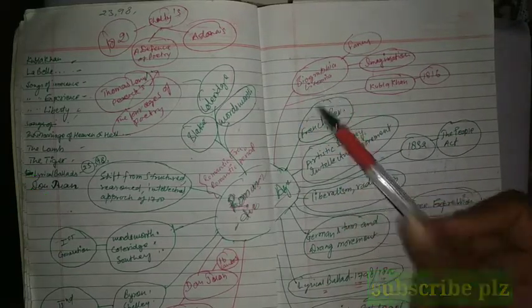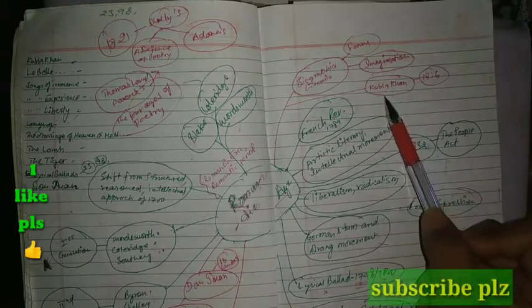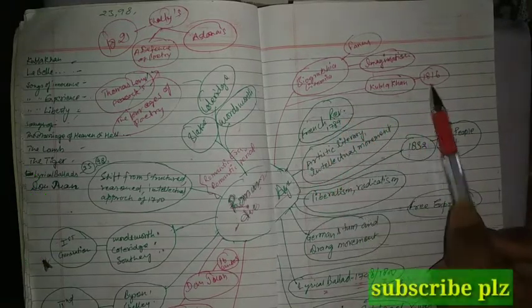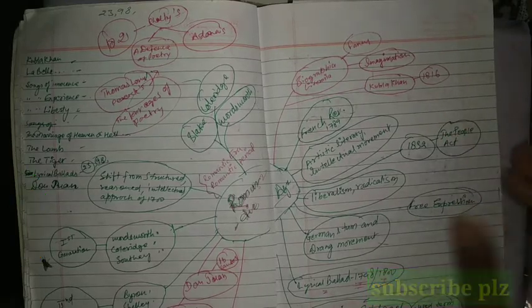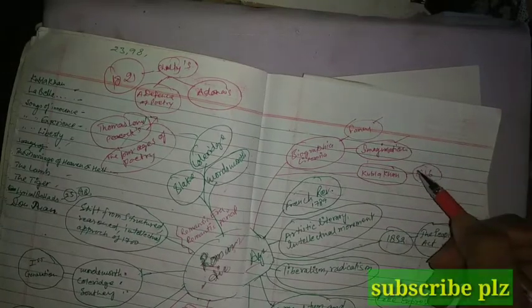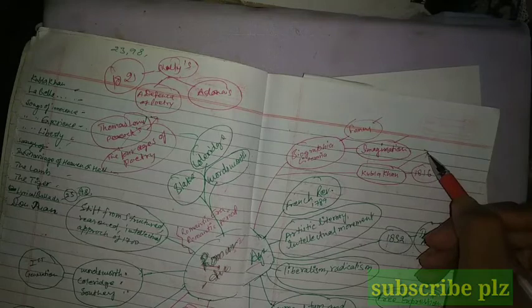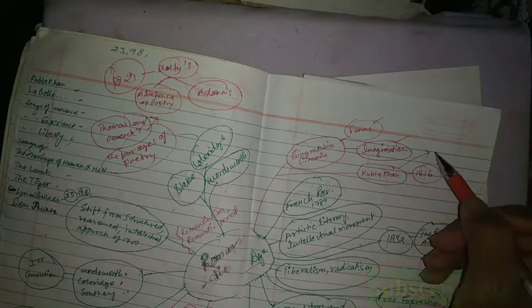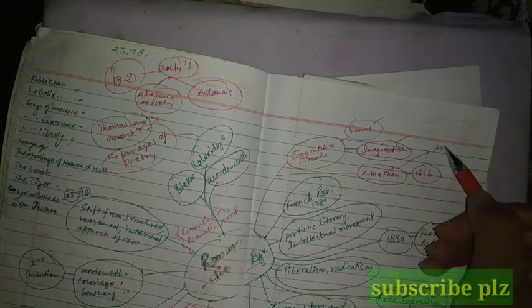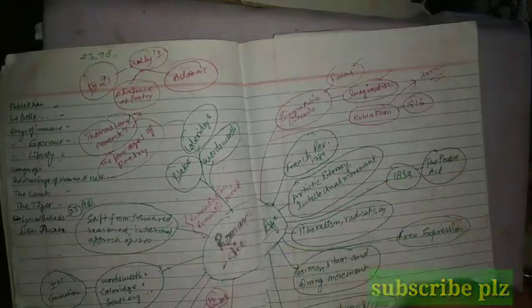Biographia Literaria - this is by S.T. Coleridge. He talked about fancy and imagination. He also wrote Kubla Khan in 1816. And if you wish to go further, you can define fancy and imagination. You can talk about Kubla Khan that it was about a dream - this is dream allegory. So you can extend this tree.